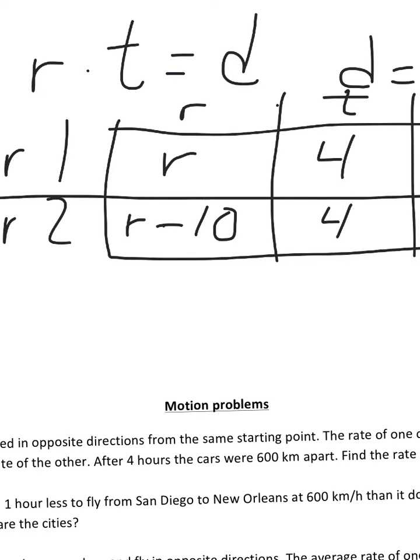it's going to be four times the R. And I know for the other one, the distance is rate times time, which is four times parentheses R minus 10.